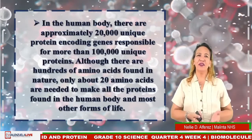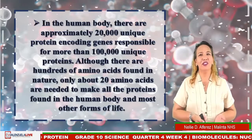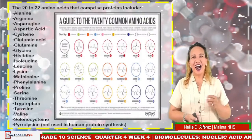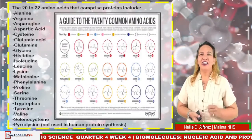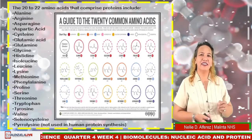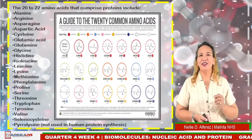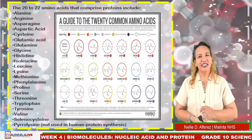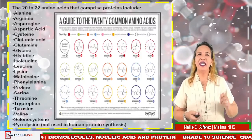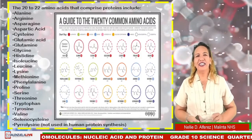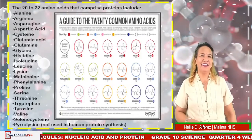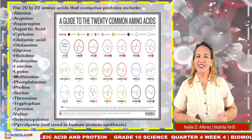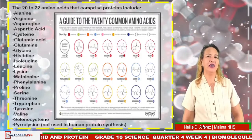The 20 amino acids that make up proteins include: alanine, arginine, asparagine, aspartic acid, cysteine, glutamic acid, glutamine, glycine, histidine, isoleucine, methionine, phenylalanine, proline, serine, threonine, tryptophan, tyrosine, valine, selenocysteine, and pyrrolysine — the last of which is not used in human protein synthesis.